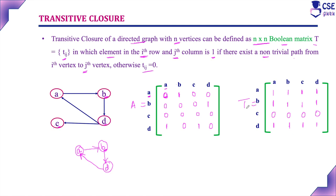This is the transitive closure for the given graph. The transitive closure logic is: if there is no direct path from A to D, but there is a path through B, we consider there is an existence of path from A to D and represent the matrix position as 1. Applying this logic gives the transitive closure, which shows existence of path between all pair of vertices: A to A, A to B, A to C, A to D; B to A, B to B, B to C, B to D; and from D as well.